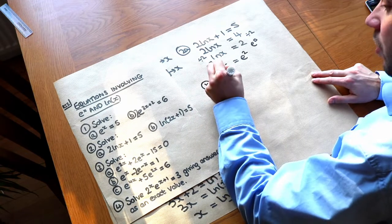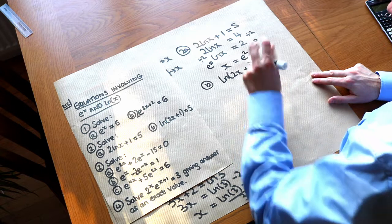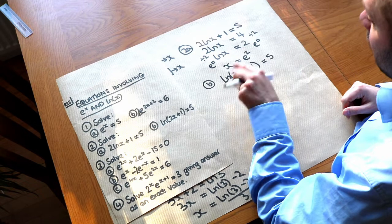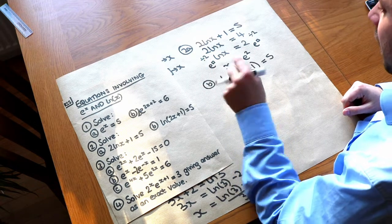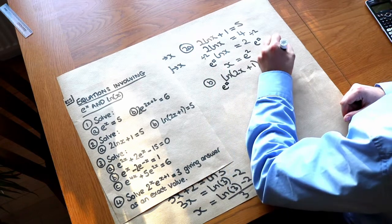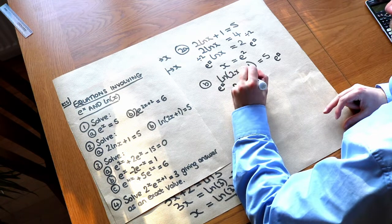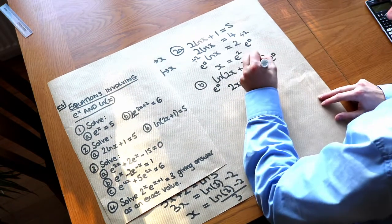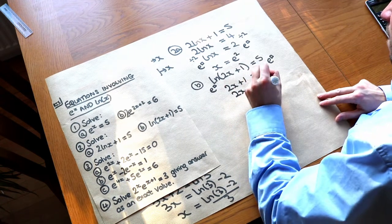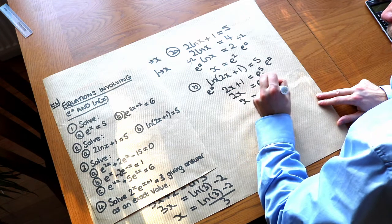For part B we've got ln(2x + 1) = 5. X was times by 2, added 1, and then it was ln, so we get rid of the ln first as that was the last thing done to x. We do e to the power of both sides, which gets rid of the ln leaving 2x + 1, and we also get e to the power of 5 on the right. Then subtract 1 and divide both sides by 2 and we are done.